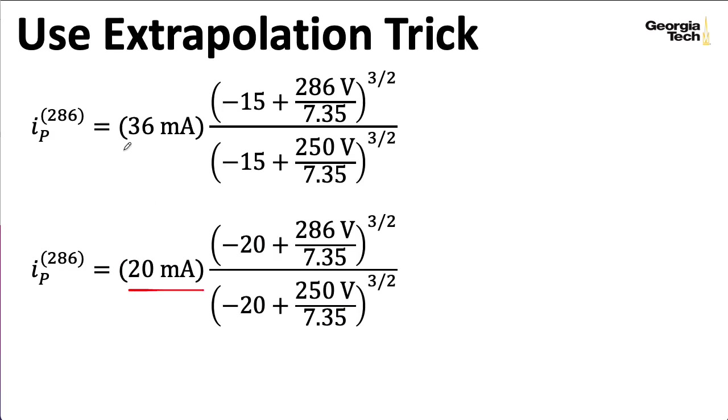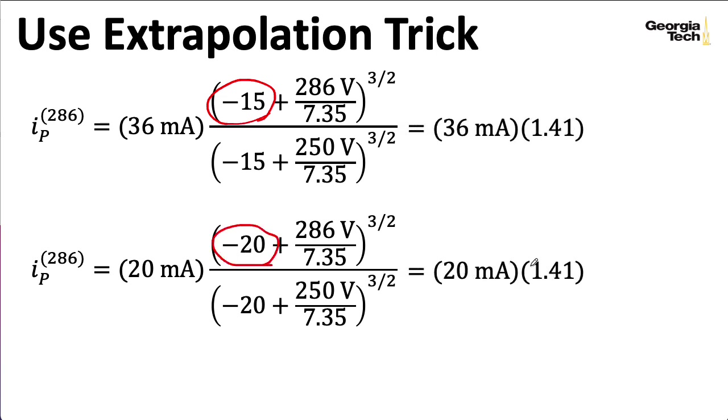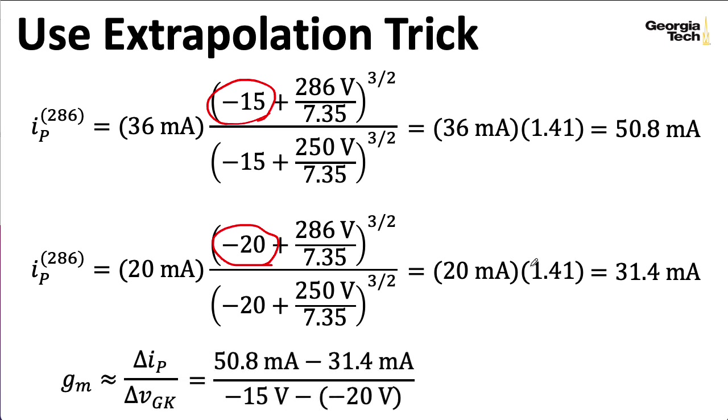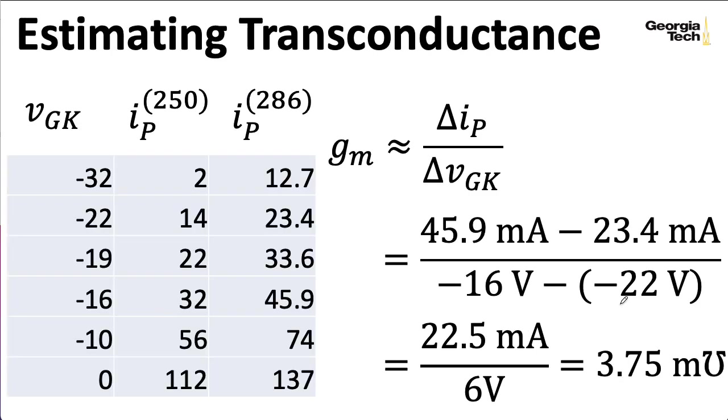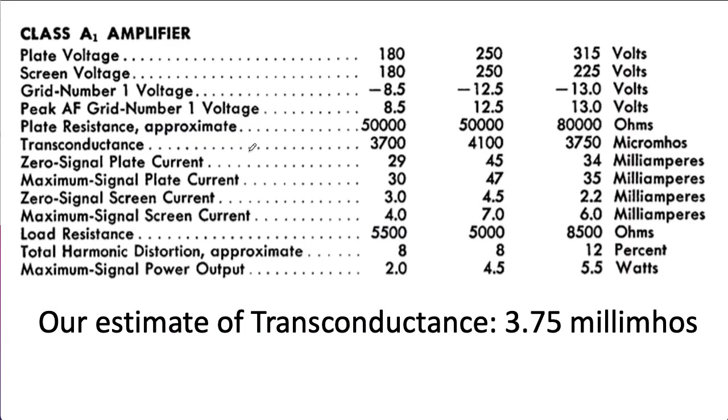I took those values of 20 milliamps and 36 milliamps and plugged them into these expressions that include these minus 15 and minus 20 volt figures. And computing this out, I got some numbers that when I try to compute the transconductance using these numbers, gives me something more like 3.88 millimhos, which is pretty close to that 3.75 I computed earlier. I kind of like the level of precision I was able to read off that earlier graph. So I'm going to use this 3.75 millimho figure. And if I were to compare that with the kinds of transconductances we see on the data sheet for these different scenarios, we see that it's more or less in the ballpark.